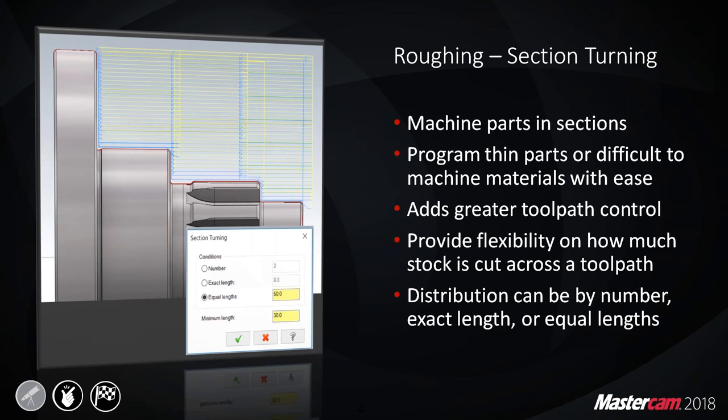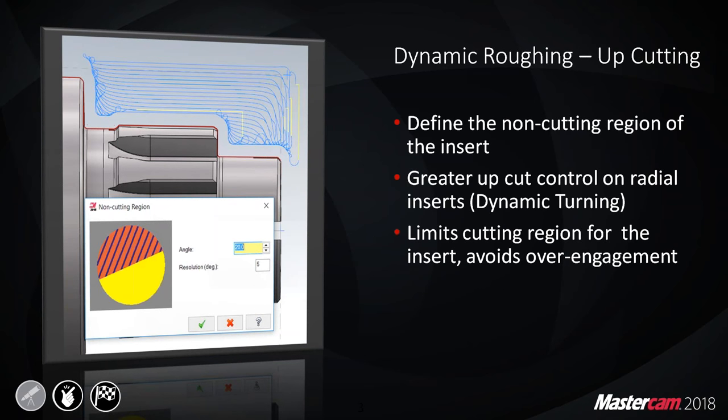Another enhancement is dynamic roughing. Prior to 2018, dynamic turning allowed back cutting where some geometry could have had over-engagement. Changes to the back-cutting angles now cause the tool to retract instead of potentially colliding with the shank. If you use the dynamic roughing option, this is definitely a setting to pay attention to.